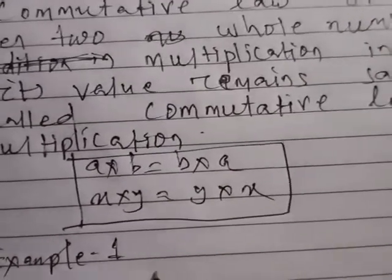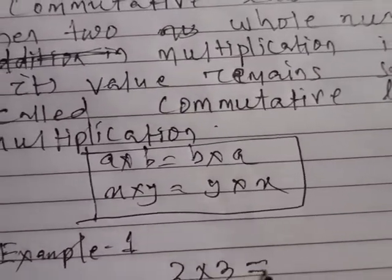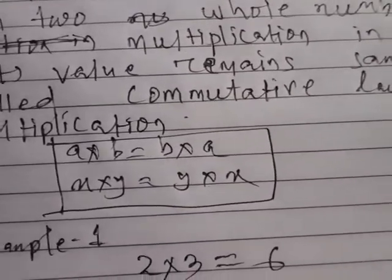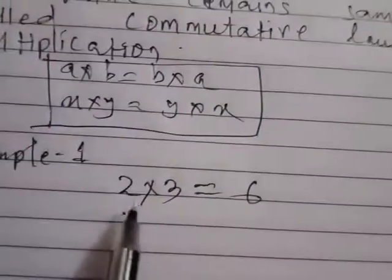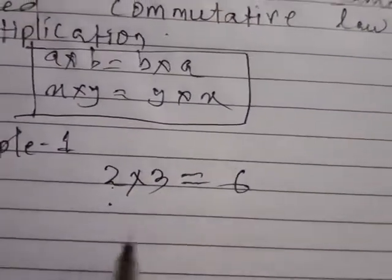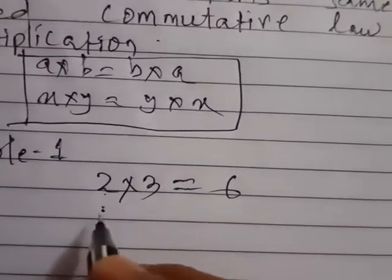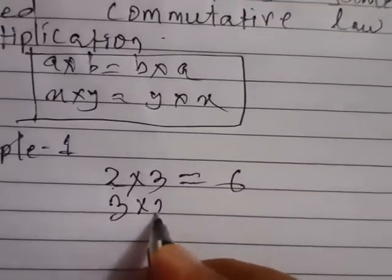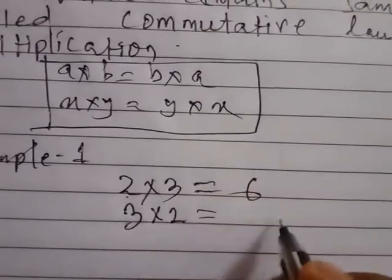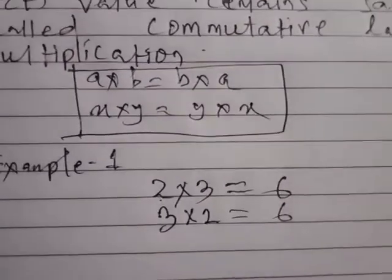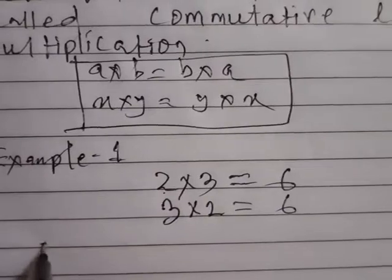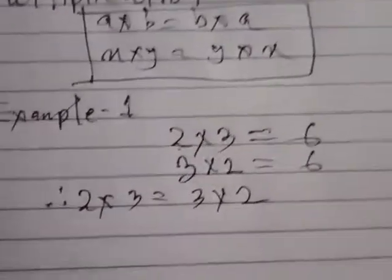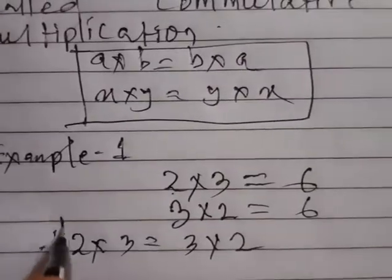For example, take a small number: 2 times 3 equals 6. Now I will change the order — first number is 3, then 2. So 3 times 2 is also 6. Hence 2 times 3 is equal to 3 times 2.